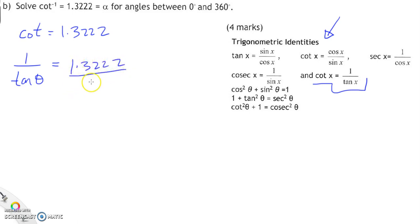Now that's the same as saying over 1. So we can flip the two of them and we can say tan theta over 1 equals 1 over 1.3222. And then we can get theta by getting the tan inverse. So one second, tan inverse of this fraction, bang that into the calculator.